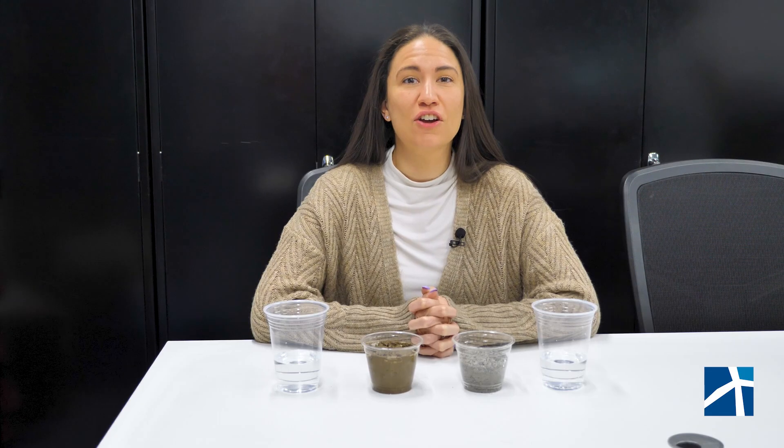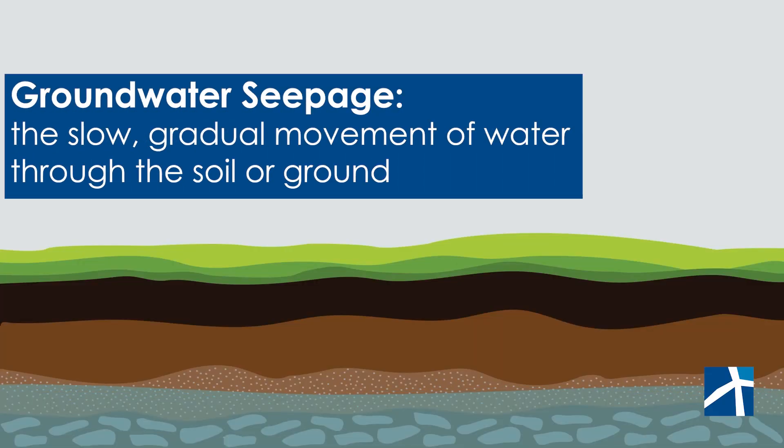Here's something interesting: groundwater doesn't just stay in one place. It moves through the ground, but very slowly. This movement is called seepage. The speed of seepage depends on the type of soil or rock underground.